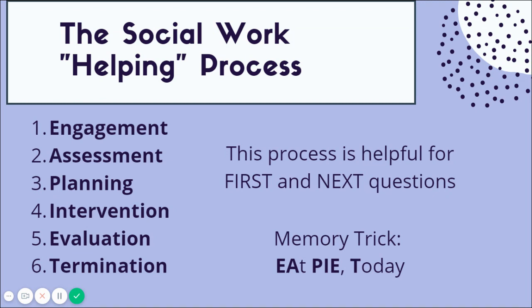The six steps in this process are engagement, assessment, planning, intervention, evaluation, and termination. There is a memory trick to help you learn the acronym for this process: EAPIET — E-A-P-I-E-T. You can see all the letters you need to know in the acronym are highlighted.